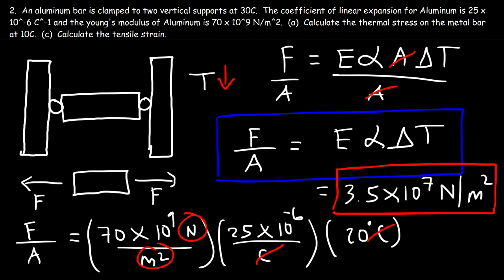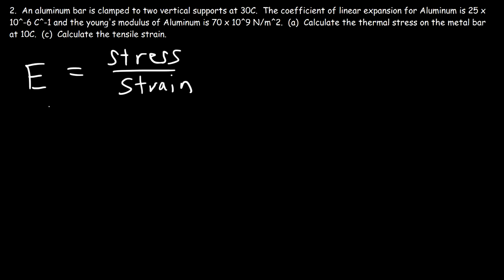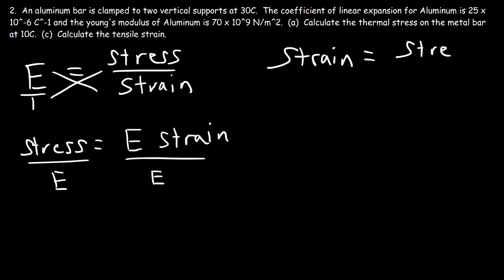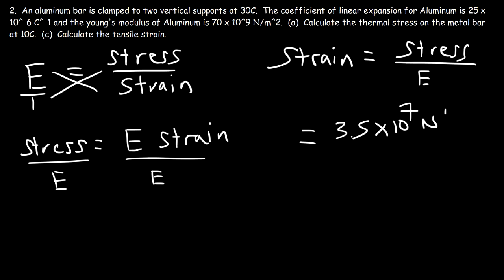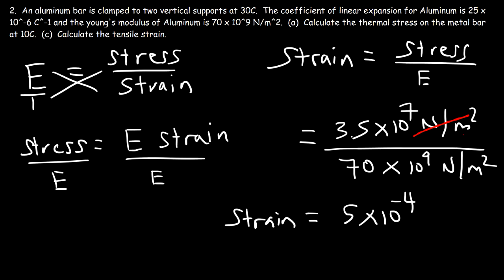Now let's calculate the tensile strain, or thermal strain. We know the elastic modulus is the ratio between stress and strain. Rearranging, stress equals the elastic modulus times strain, so strain equals stress divided by E. The tensile strain is the thermal stress, 3.5 times 10 to the 7 newtons per square meter, divided by the elastic modulus for aluminum, 70 times 10 to the 9 newtons per square meter. The thermal strain is 5 times 10 to the minus 4, and it is unitless.